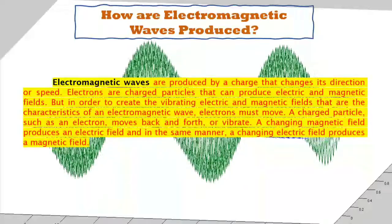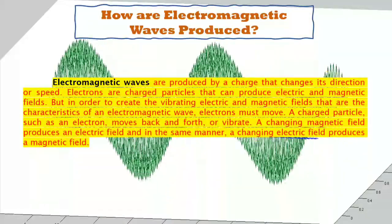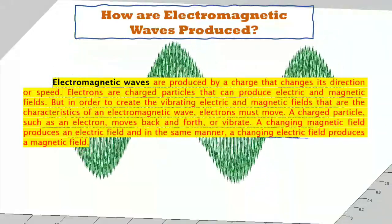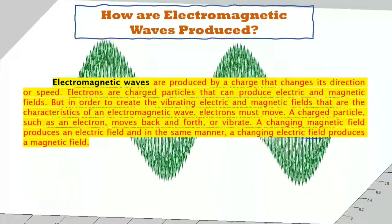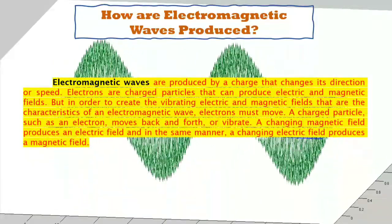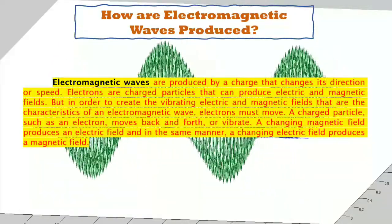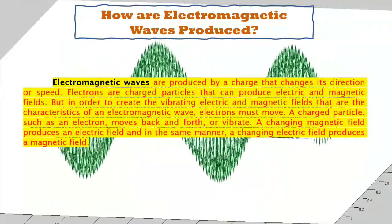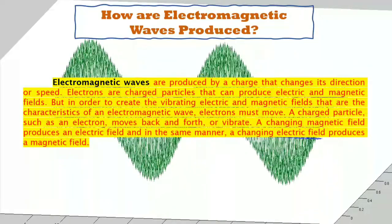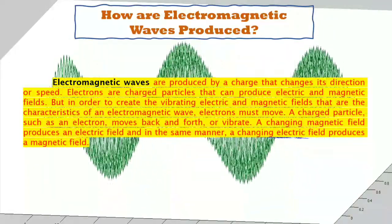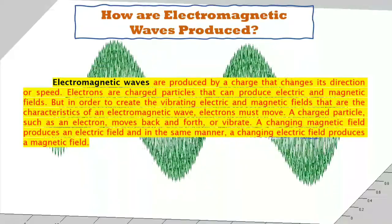Electromagnetic waves are produced by a charge that changes its direction or speed. Electrons are charged particles that can produce electric and magnetic fields. But in order to create the vibrating electric and magnetic fields that are the characteristics of an electromagnetic wave, electrons must move. A charged particle, such as an electron, moves back and forth or vibrate. A changing magnetic field produces an electric field, and in the same manner, a changing electric field produces a magnetic field.